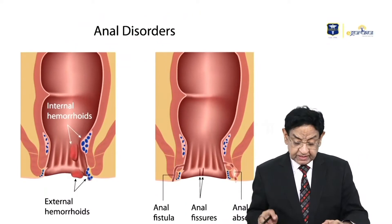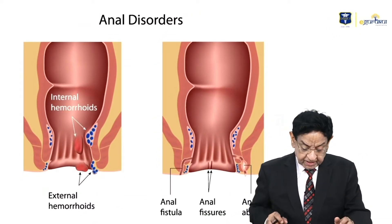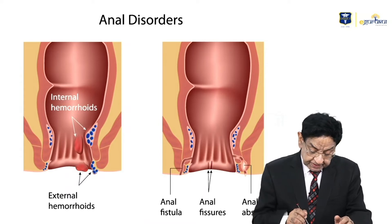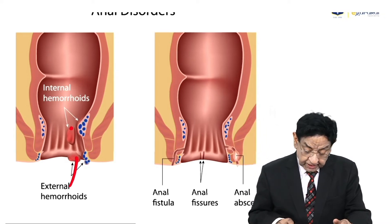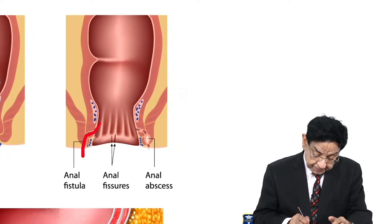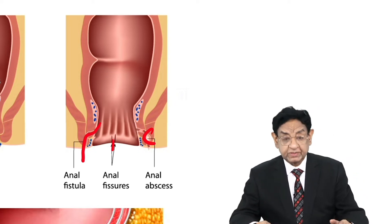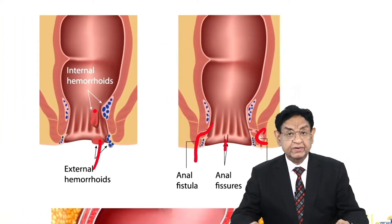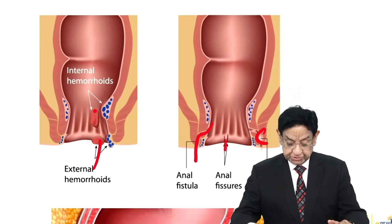This diagram depicts various anal disorders. You can see internal hemorrhoids, external hemorrhoids, a fistula, anal fissures, and anal abscess — various anal and perianal pathologies shown in this picture.